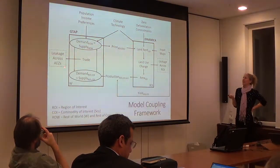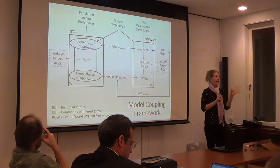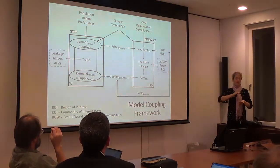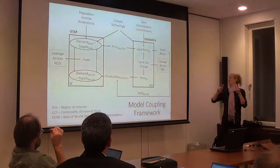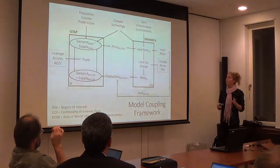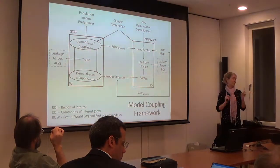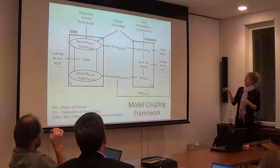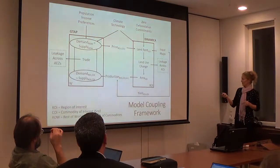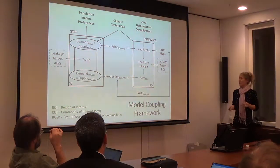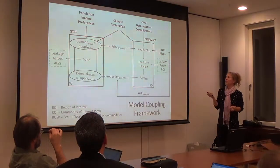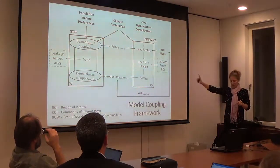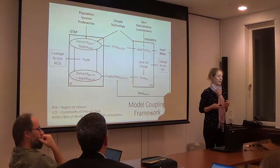In GTAP, we can understand global leakage across agroecological zones. By overlaying those zones on countries, we get a subnational — though not fully spatialized — understanding of where leakage is going, and we can also understand leakage to other types of crops such as oil palm. In terms of scenarios, we can look at population, incomes, and preferences in GTAP, modify zero deforestation commitments in Dynamica, and play with climate, technologies, and yields.